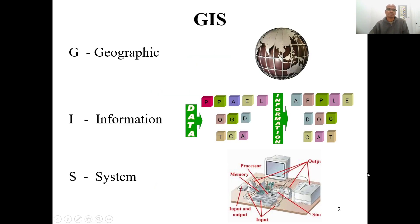I hope everyone knows about GIS — it stands for Geographic Information System. Geography is related to the science of where, where exactly things are located. Information is whatever you collect from geography; we call it data, and data can be converted into various forms of information. System is required to organize and process the data into information. Basically, GIS involves collecting spatial data from the earth's surface and utilizing it for information generation to solve problems.